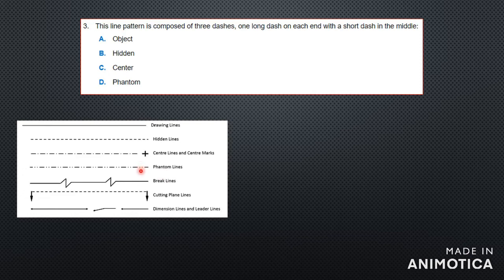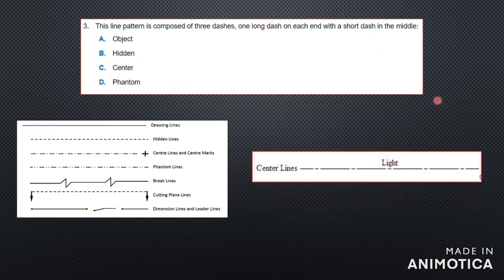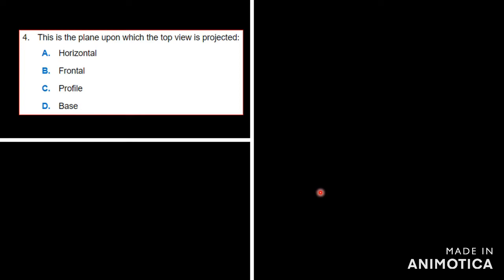The answer is center line. The phantom line has two short dashes, which doesn't match. Break lines don't have the characteristic of one long dash, one short dash, one long dash. As you can see, the center line is: one long dash, one short dash, one long dash — so it's a center line.